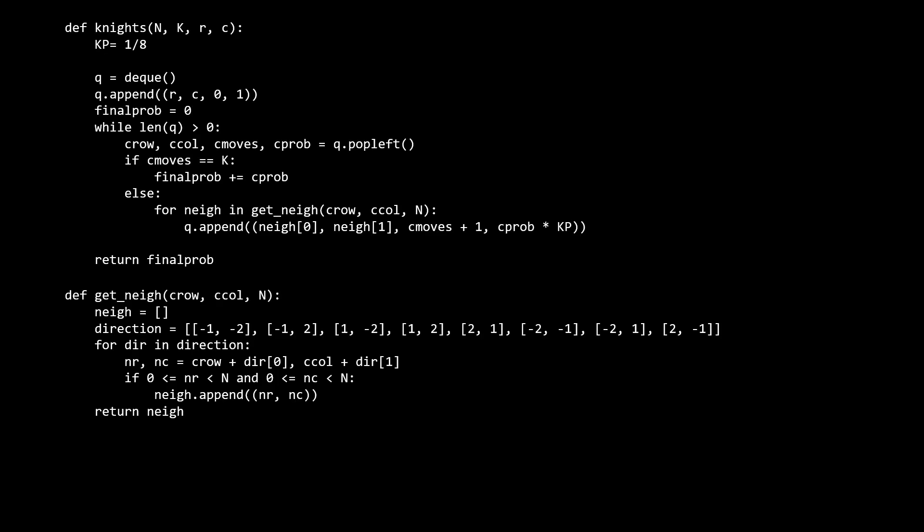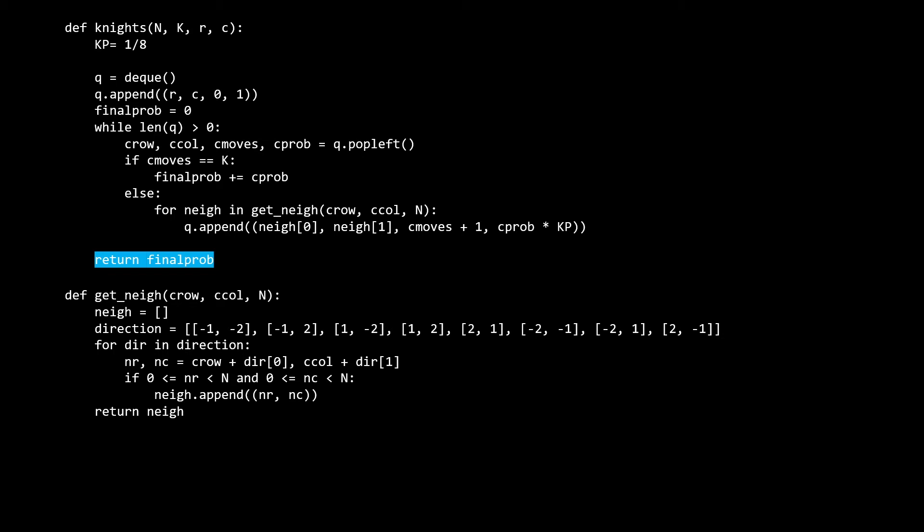The get_neighbors function just returns a list of the coordinates that are still in bounds based on the current position. For each of those coordinates, we append a new element on the queue and add one to the moves amount. This symbolizes us making one move with the knight. For the probability value, we multiply whatever the current probability is for that path by one-eighth, because there's a one-eighth chance that based on this existing path, the knight will branch into this new position. Once the queue is empty and the BFS finishes, we return the final accumulated probability.